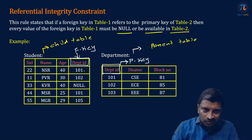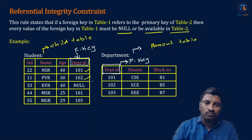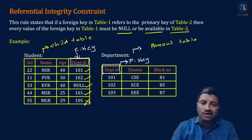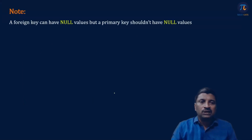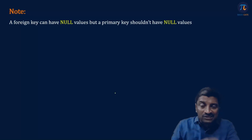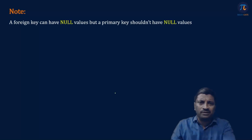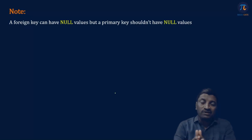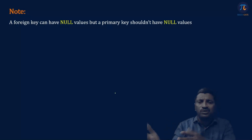Coming to the first record, 101 is present in department table. 102 is present. Null — no issue. 101 is present. But 105 is not available in department table or parent table, so it is violating referential integrity constraint. Note: a foreign key can have null values, but a primary key should not have null values. According to entity integrity constraint, a primary key should not have null values. If a candidate key is having null values, you should not select it as a primary key, so there is no chance of null values in primary key. But for a foreign key, there is a possibility of null values — either it can be null or it should be available in parent table.